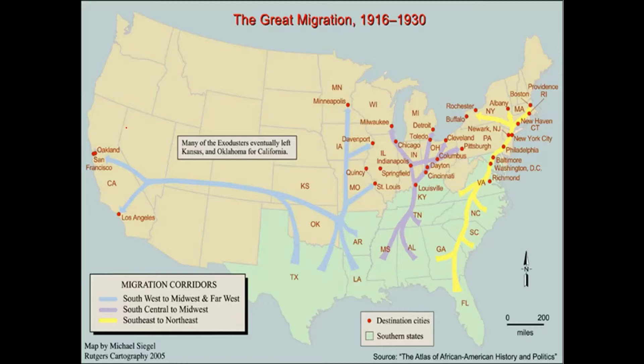This is the last part of our video: the Great Migration, 1910 to 1930. This is the migration of Black Americans out of the South and into the North. They go mainly to cities because that's where the jobs are. Today, many of these cities have large African-American or Black American populations as a result.